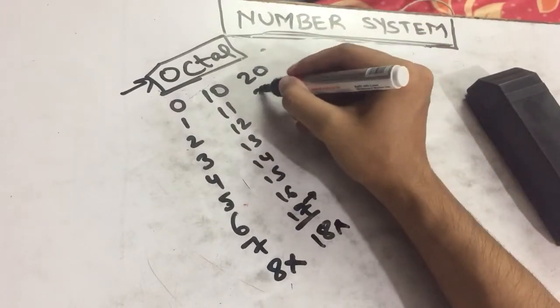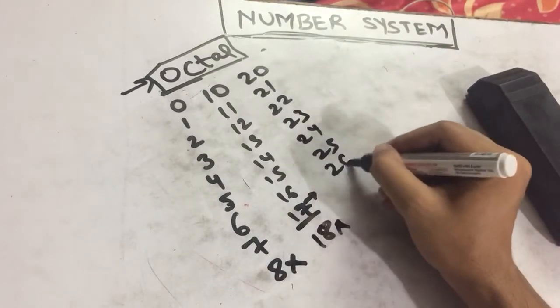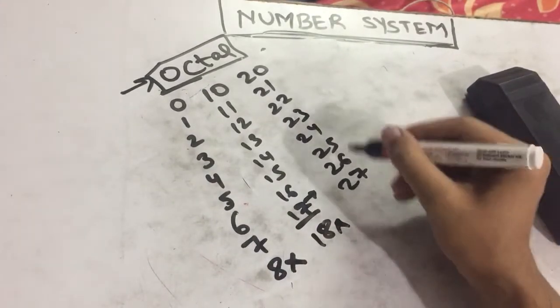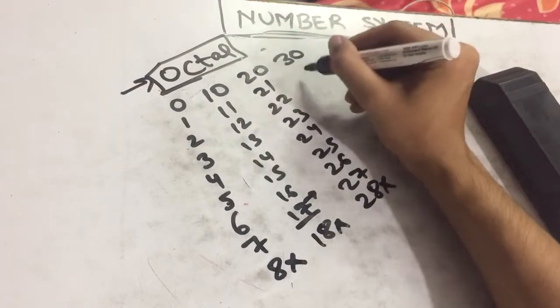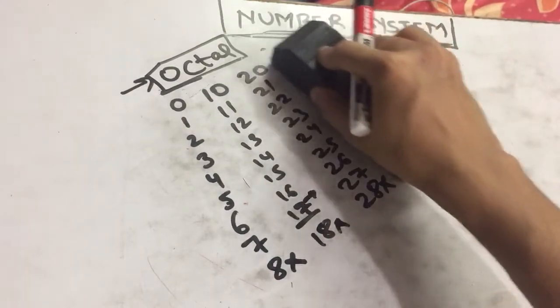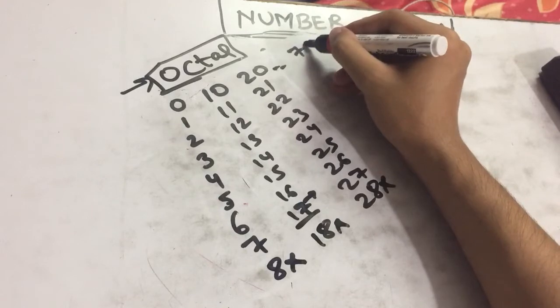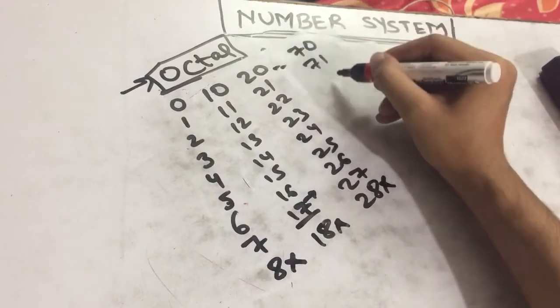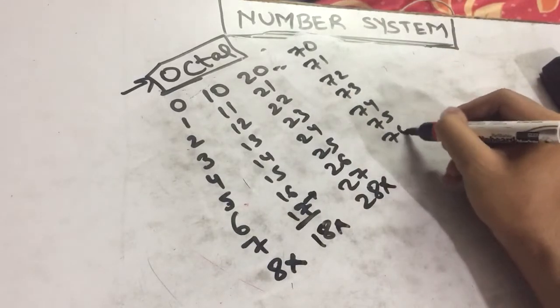It will be 20, 21, 22, 23, 24, 25, 26, 27. After 27 we can't write 28 so we'll move to 30, 31, and so on. We'll come to 70, 71, 72, 73, 74, 75, 76.